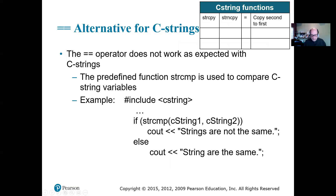If the first one is bigger, it checks character by character starting from the beginning. If they are equal, it goes to the next one, and it checks their ASCII number. So capital A is 65, lowercase a is 97. So 65 is smaller than 97. So if I have two strings where one starts with capital A and the other starts with lowercase a, the capital A is smaller than lowercase.